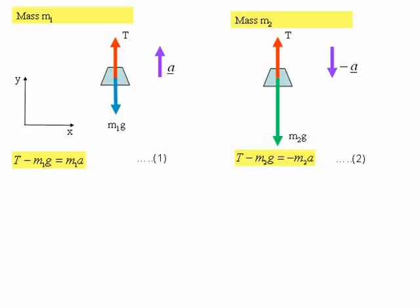The equation of motion for mass m2: on the left hand side, T minus m2g — that's the resultant force. Substituted into Newton's second law gives us, on the right hand side, minus m2a. The minus sign is there because the acceleration is in the opposite direction for this block.